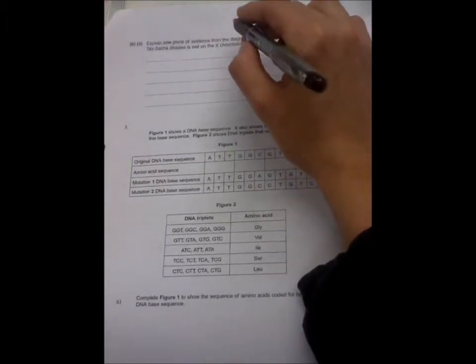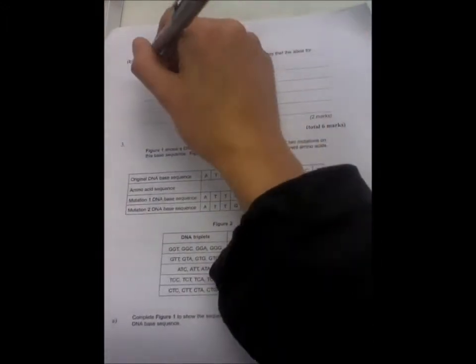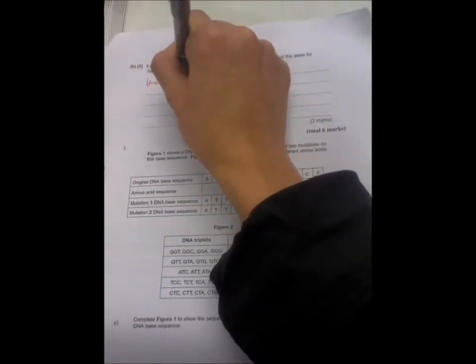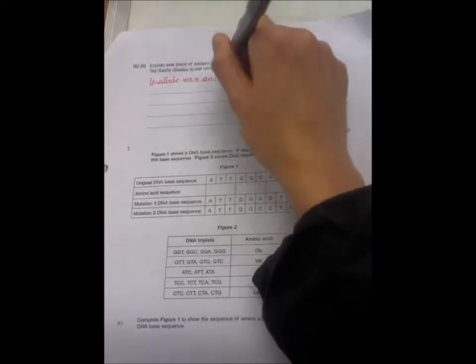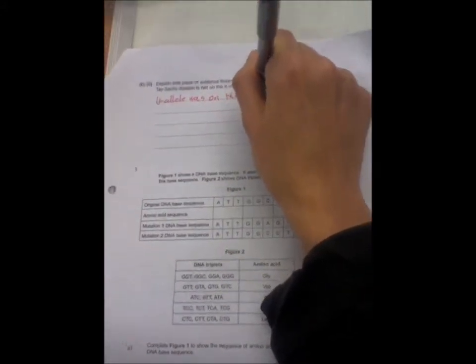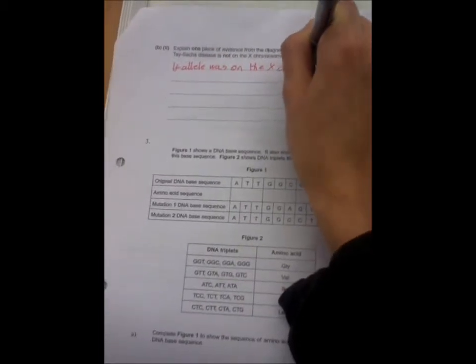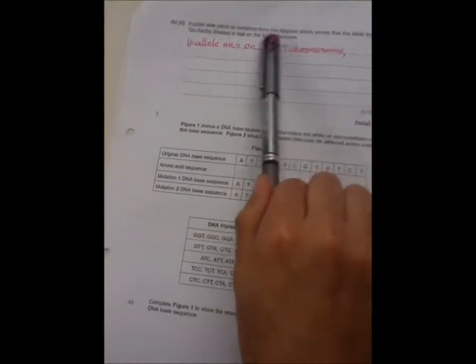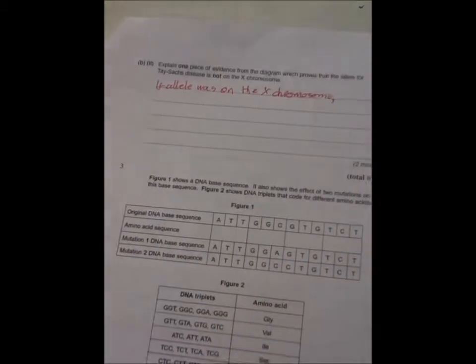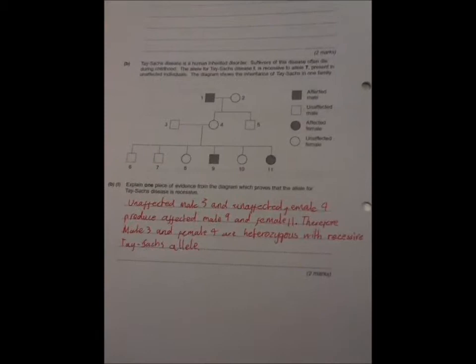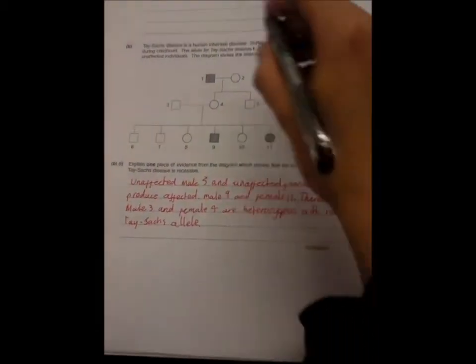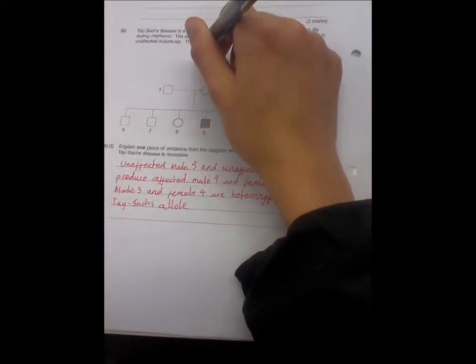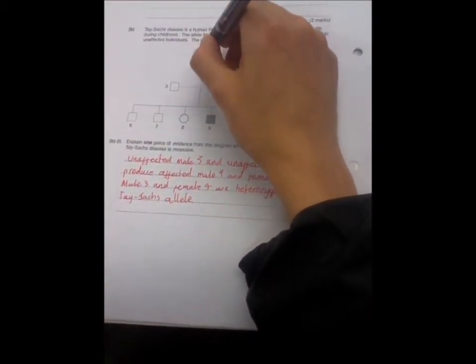So if the allele, if allele was on the X chromosome, we want evidence to the contrary of whether allele is on the X chromosome. So I think a good idea would be to write out the genotypes of the sex chromosomes, presuming that it is sex-linked. And then we will find something that doesn't add up.